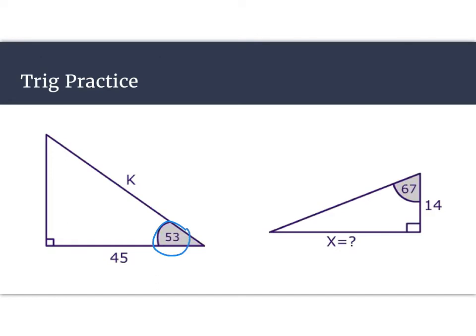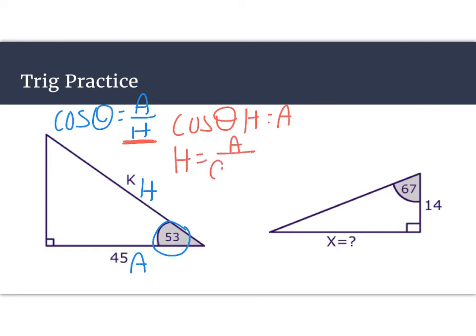So I have my angle here, and then I have my adjacent side, and I have my hypotenuse. So that means I need to use my cosine. So my cosine is my adjacent over hypotenuse. So we know that I need to solve for my hypotenuse. So let's rearrange our equation. So I'm going to have cosine theta equals H over A. So that's going to give me H equals A over cosine theta. And from here, all I need to do is plug in my numbers.